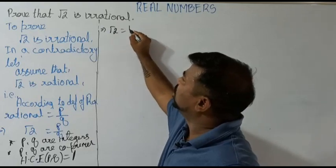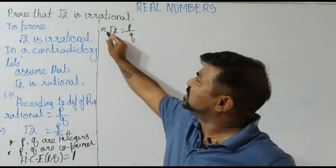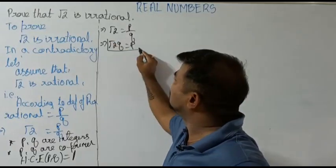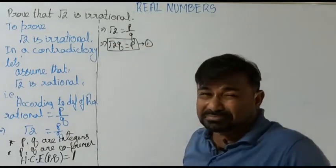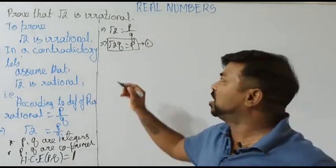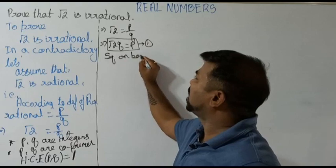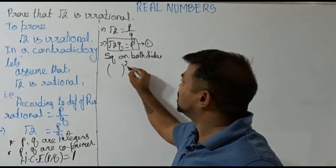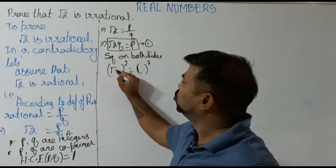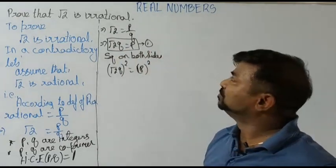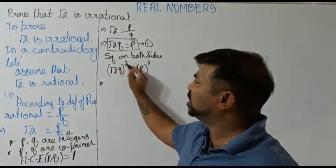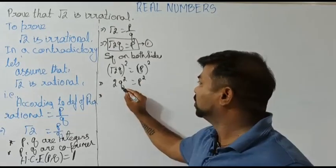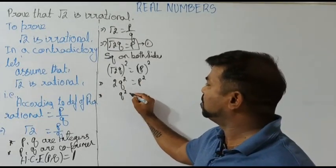Let us take that root 2 is equal to p by q. Taking q to the other side: root 2 × q = p. Box this and call it equation 1. Now squaring on both sides: (root 2 × q)² = p², which gives us 2q² = p².